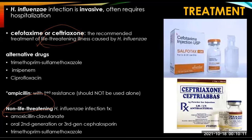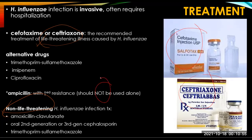For treatment, if H. influenzae infection is invasive, the patient must be hospitalized. The recommended treatment for life-threatening illnesses caused by H. influenzae is cefotaxime or ceftriaxone. Alternative drugs include SXT (trimethoprim-sulfamethoxazole), imipenem, and ciprofloxacin. With ampicillin, there is increased resistance so it should not be used alone but rather under combination therapy. If the infection is non-life-threatening, we can use amoxicillin-clavulanate, oral second or third generation cephalosporins, or SXT.